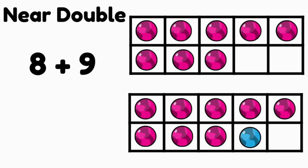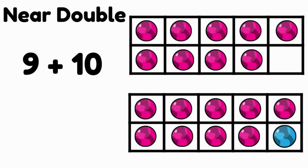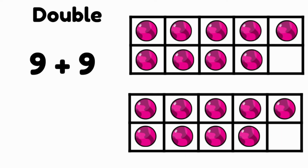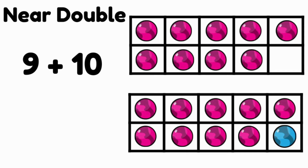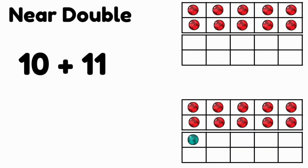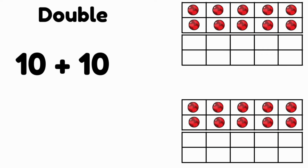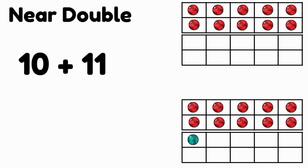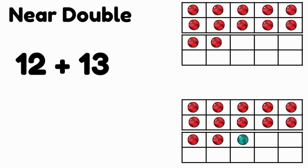Here is nine plus ten — it's a near double of nine plus nine, just one more. Nine plus ten is our near double. Ten plus eleven is a near double of ten plus ten, just one more, so we can use ten plus ten to help us solve this problem. Twelve plus thirteen is also a near double — it is just one more than twelve plus twelve.